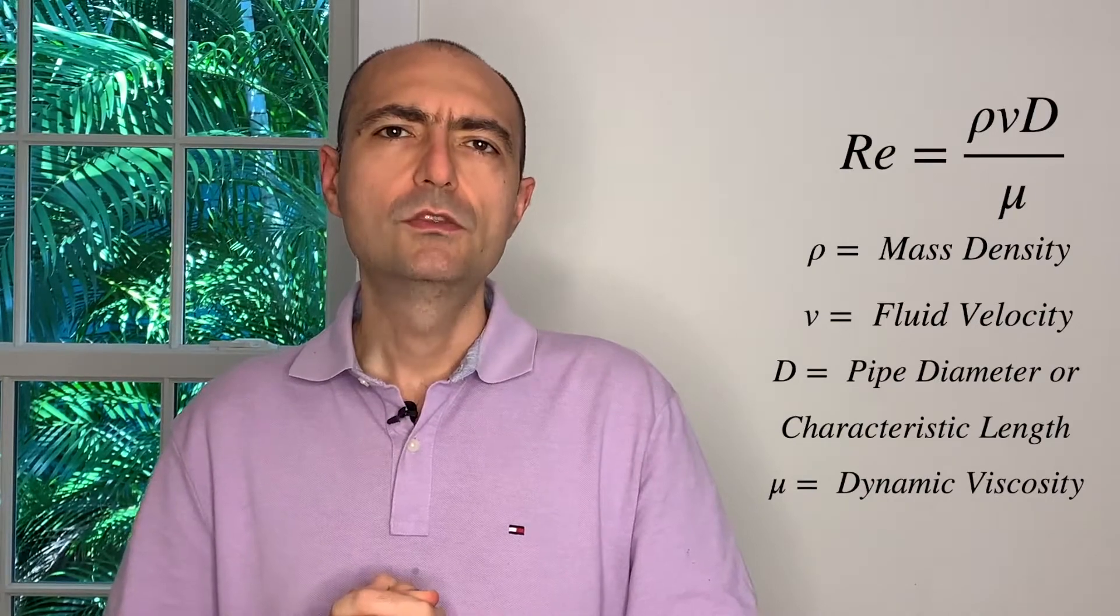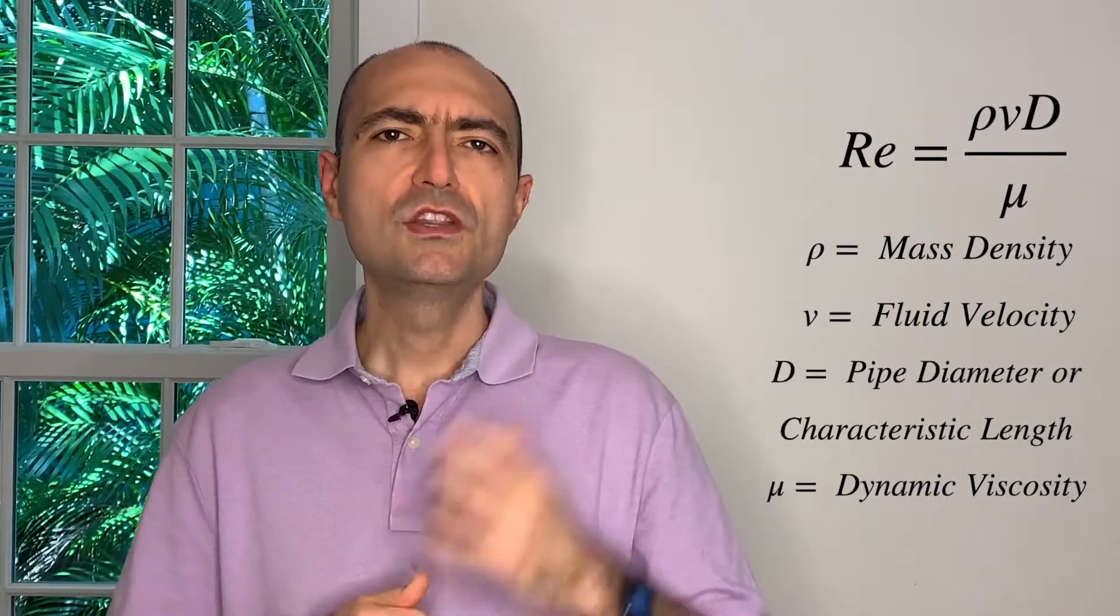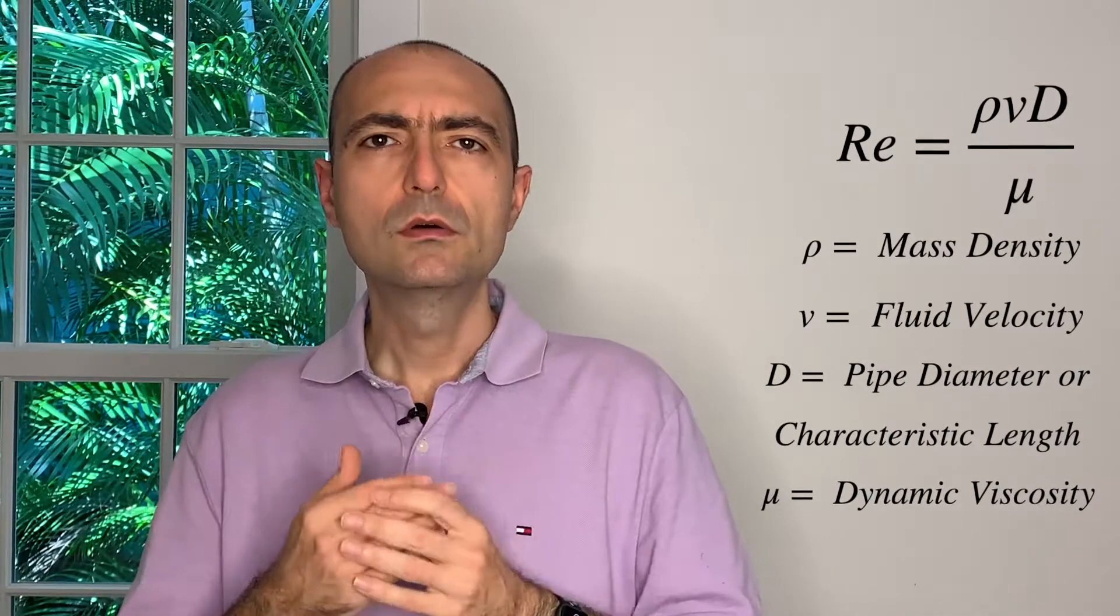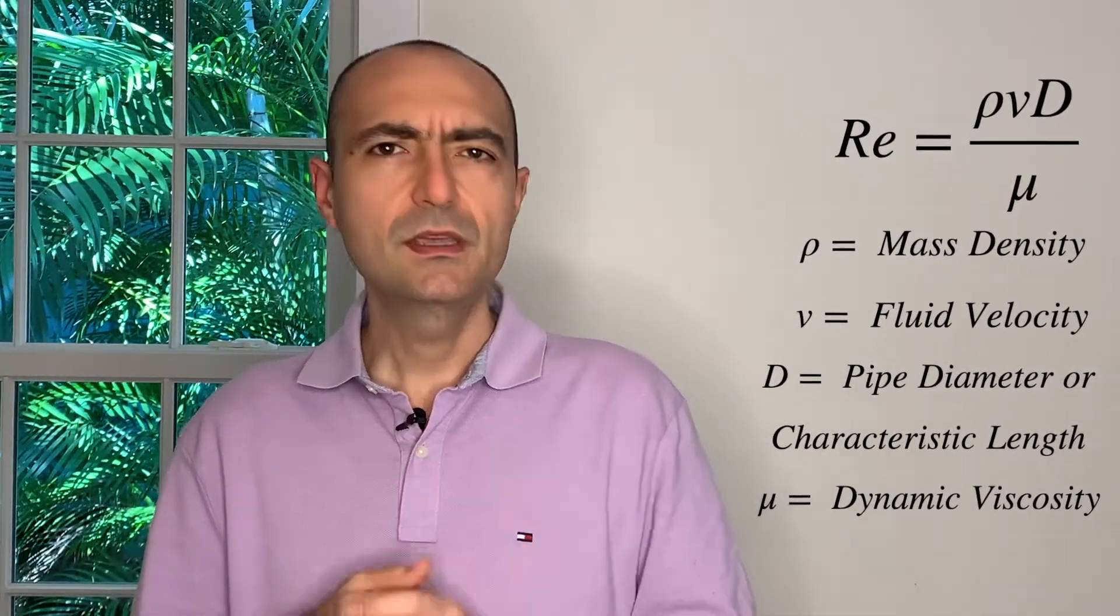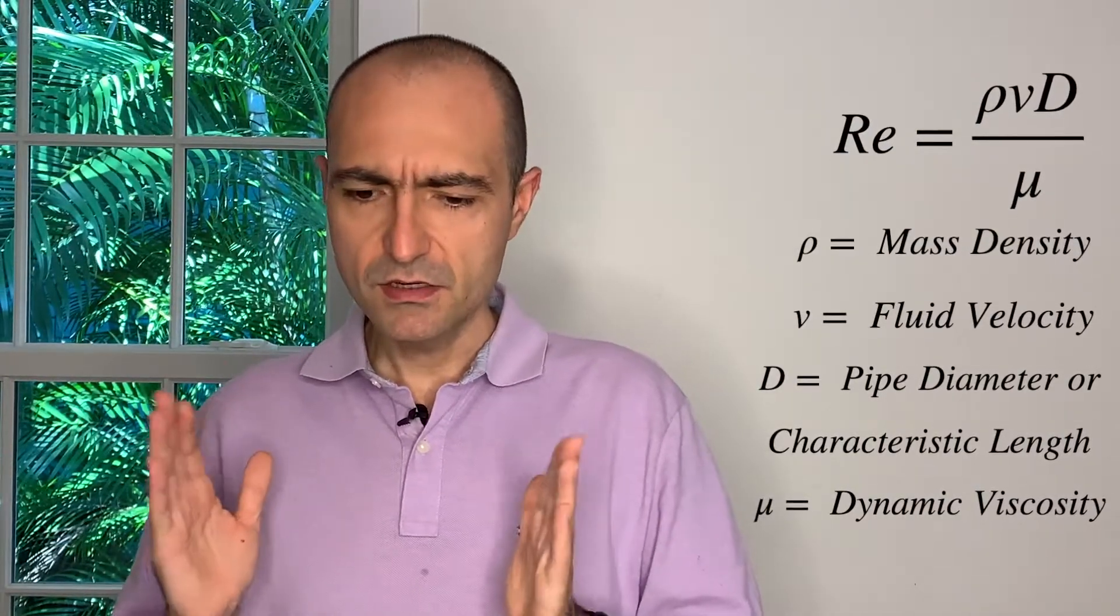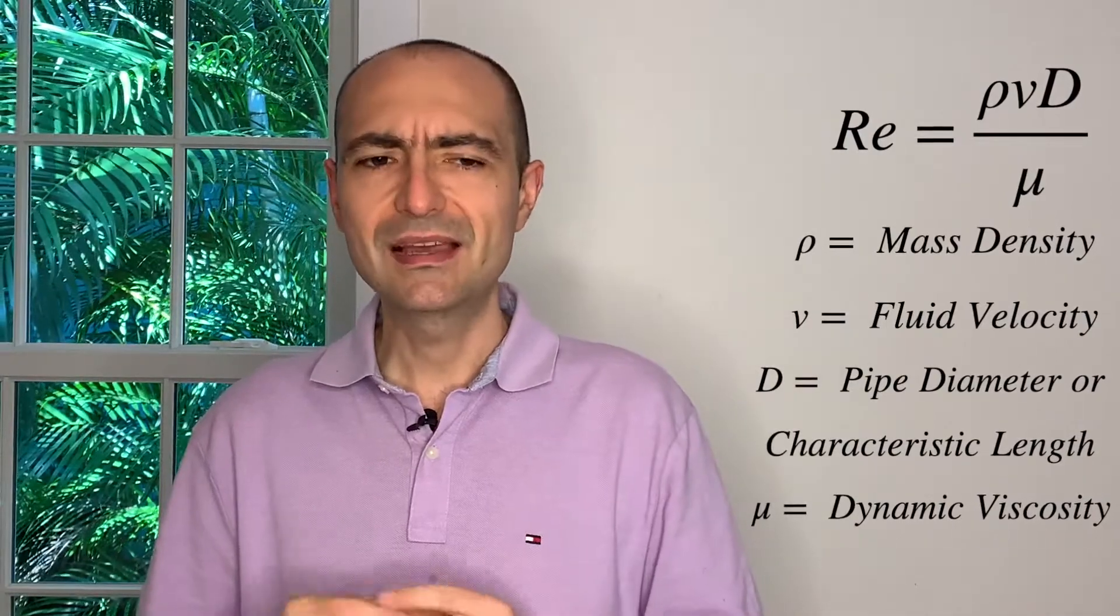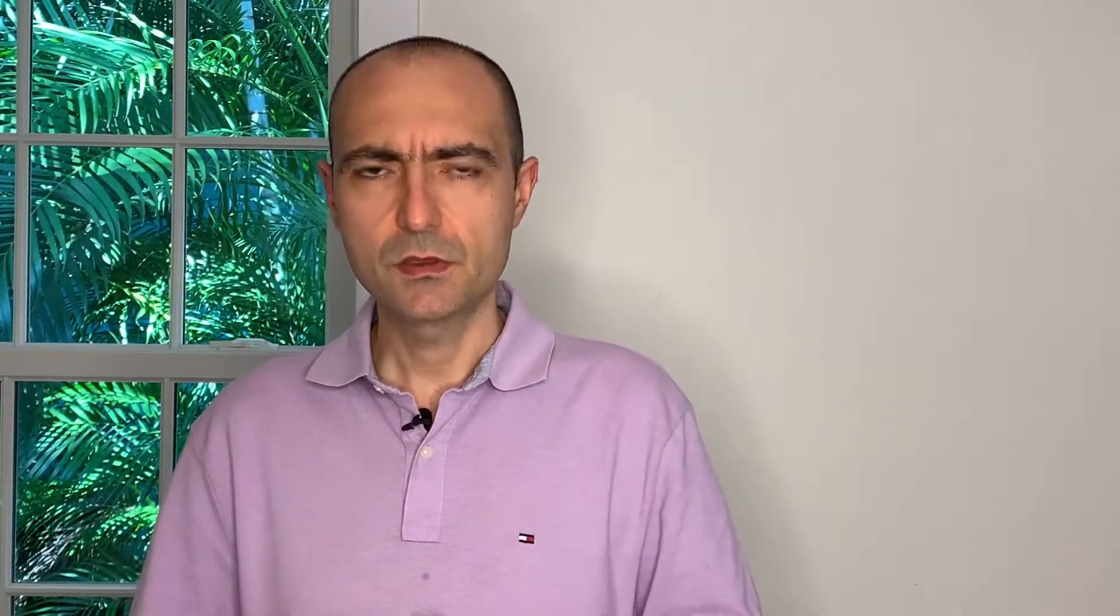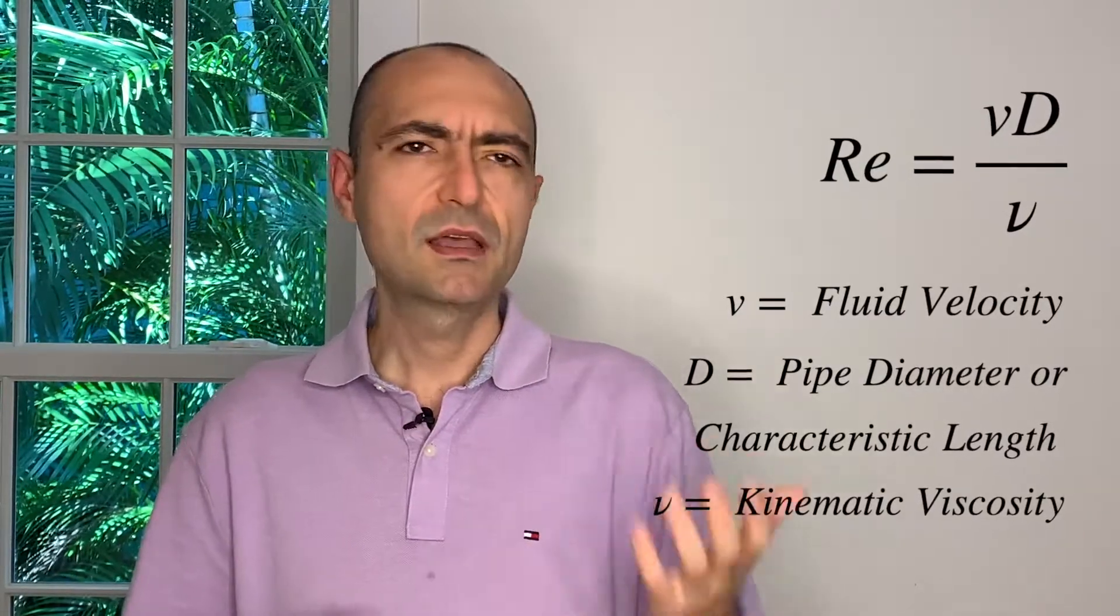Before going forward, the first thing I want to talk about is a non-dimensional parameter called Reynolds number. The Reynolds number is basically the ratio of inertial to viscous forces. If you want the equations, it is rho (the density of the fluid, also called mass density), v is the velocity of the fluid, d is some characteristic length. The d is there to highlight that it's the diameter if this is a pipe, but it doesn't have to be. The denominator, you will see this is the dynamic viscosity.